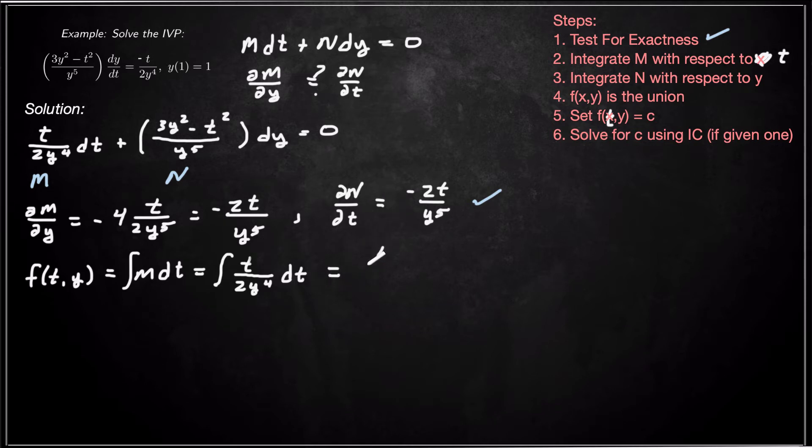So now integrate that. We get t²/(4y⁴) plus possibly something that only depends on y. We'll call it g(y). So that's our f(t,y) if we integrate M.